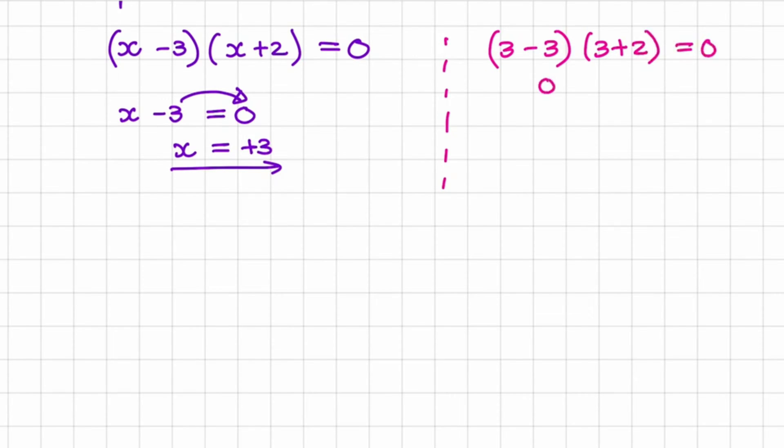So that becomes 0 multiplied with 5 and therefore the left hand side is equal to the right hand side. So that's our result for the first bracket.